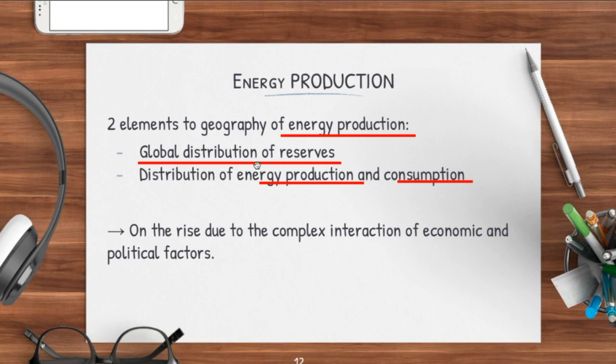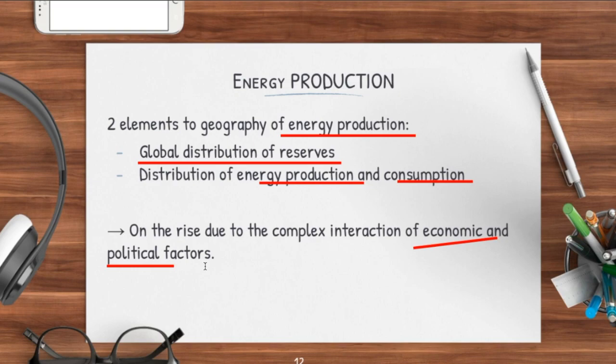Energy production is on the rise due to economic and political factors. With increasing affluence, there is naturally greater consumption of energy. With greater income, you can afford air conditioners and washing machines, which results in greater energy production. This boosts the other side of the debate — you notice nowadays there are more energy-saving devices. That is where your debate can stand from in terms of energy production: is it actually sustainable in the long run?